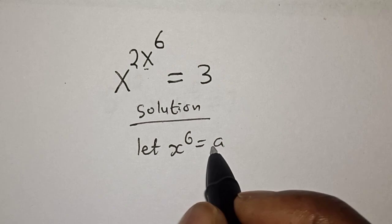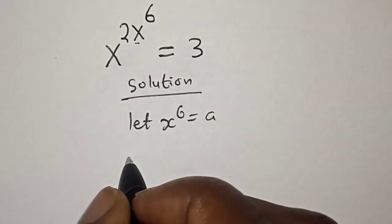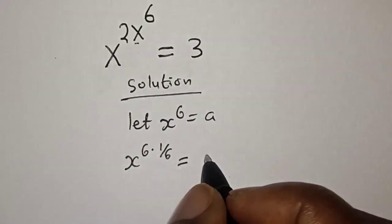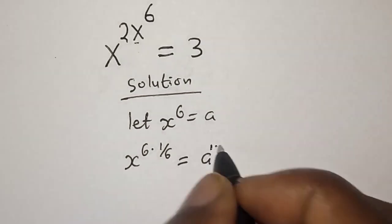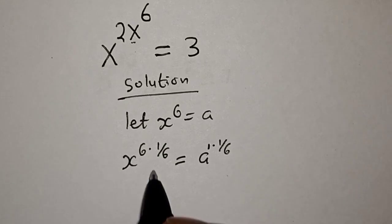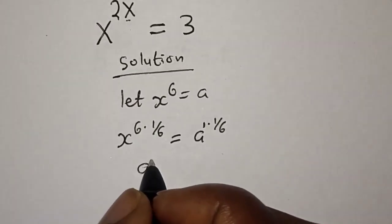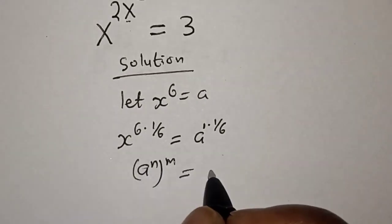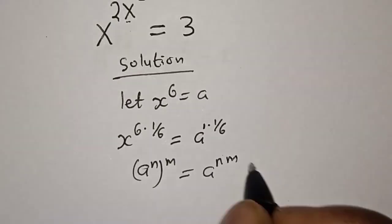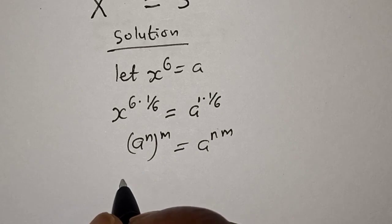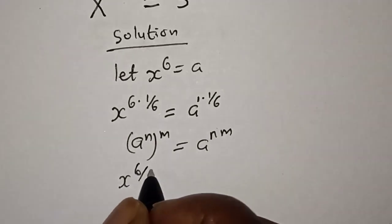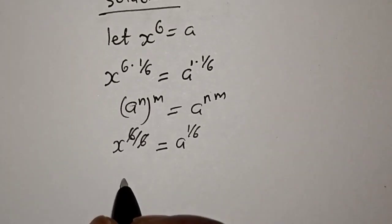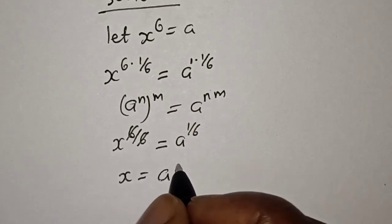Now let's multiply the power of both sides by 1 over 6. That is, s raised to power 6, multiplied by 1 over 6, is equal to a raised to power 1 multiplied by 1 over 6. Remember this rule: a raised to power n, to the power of m, is equal to a raised to power n times m. Then we have s raised to power 6 over 6 is equal to a raised to power 1 over 6. This 6 will cancel this 6, therefore s is equal to a raised to power 1 over 6.